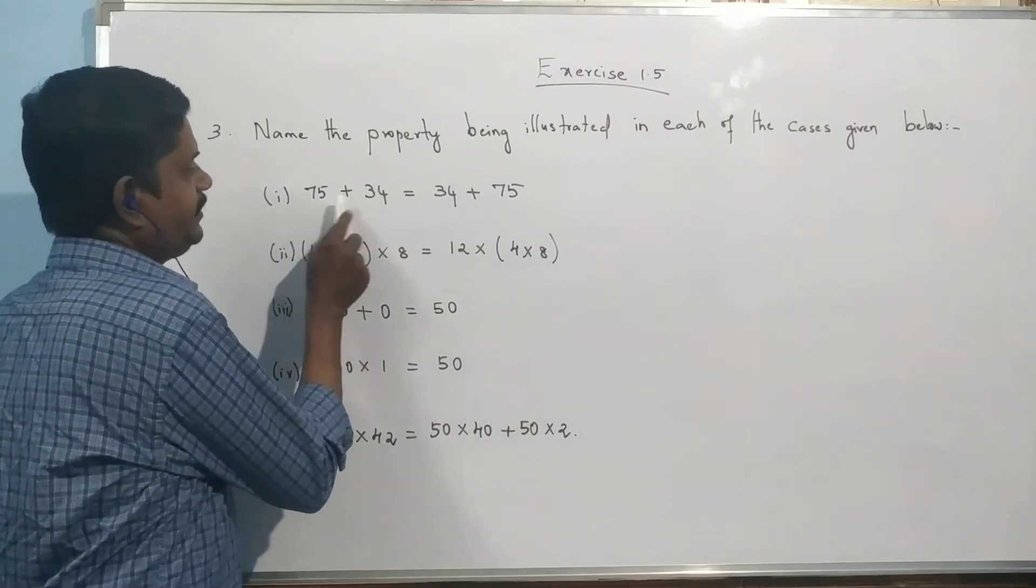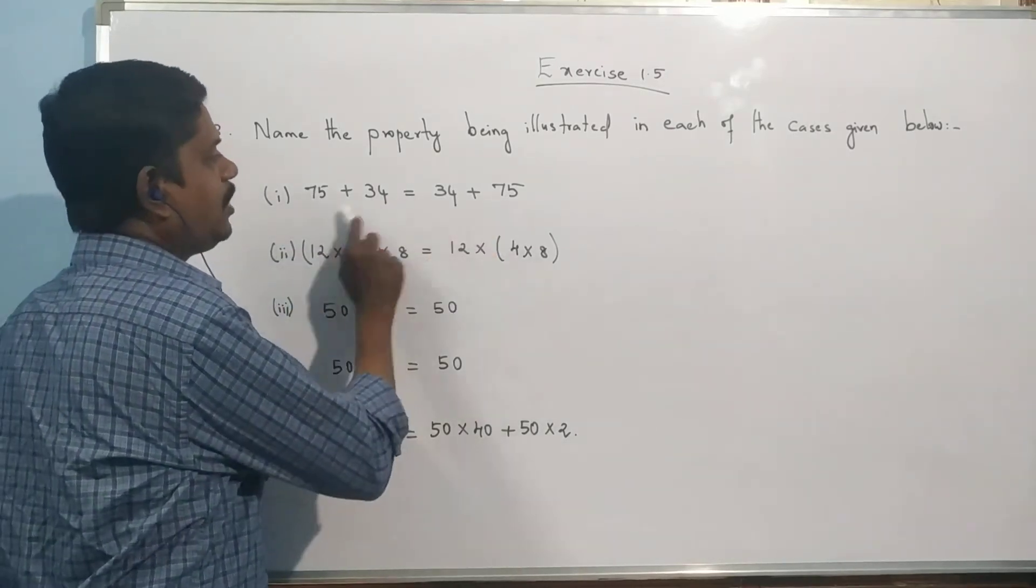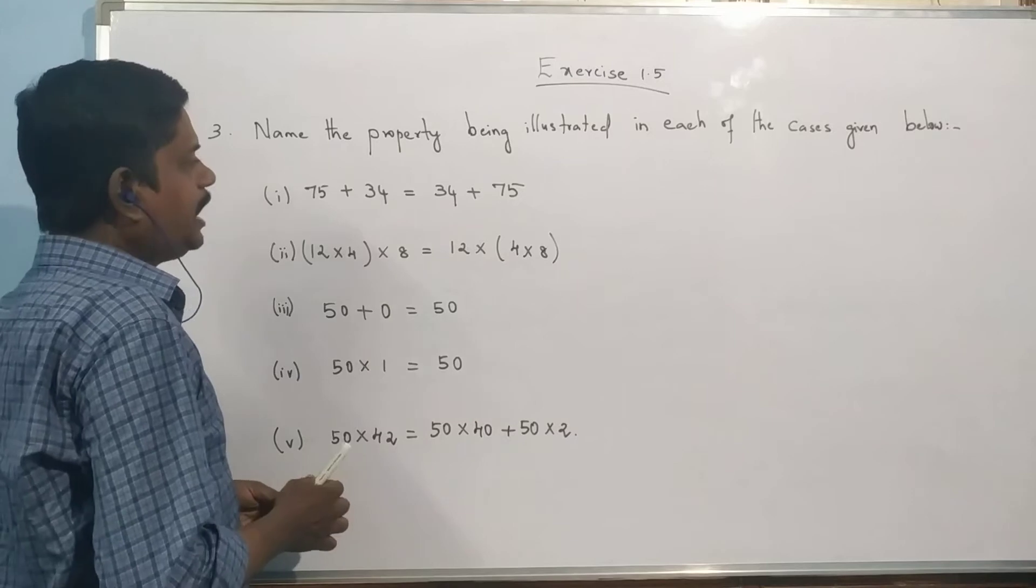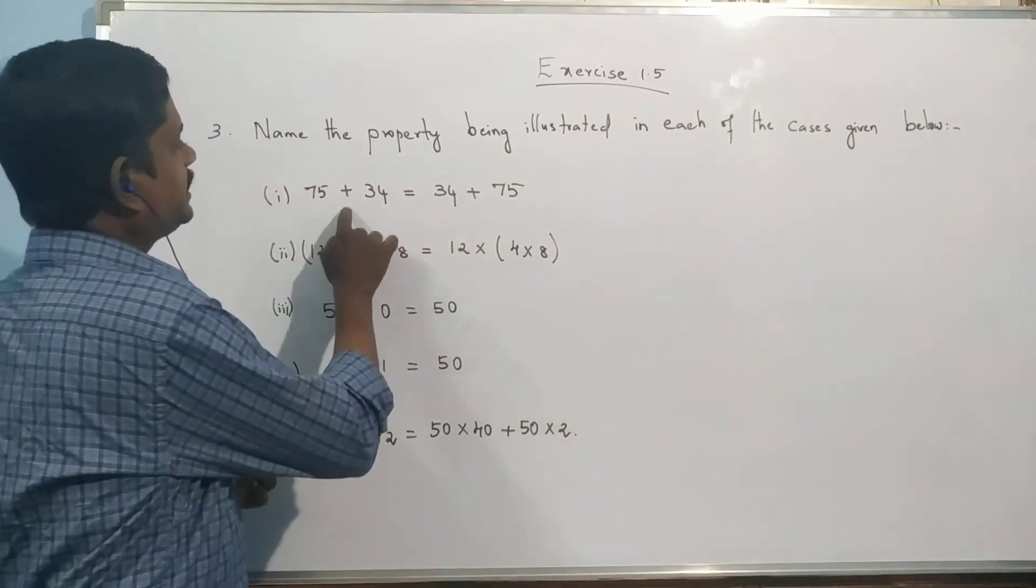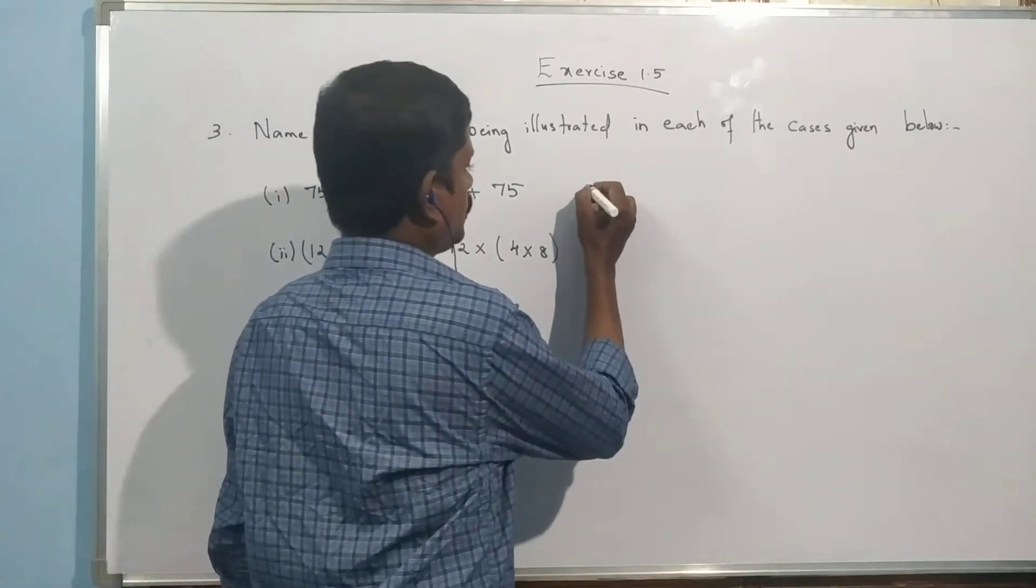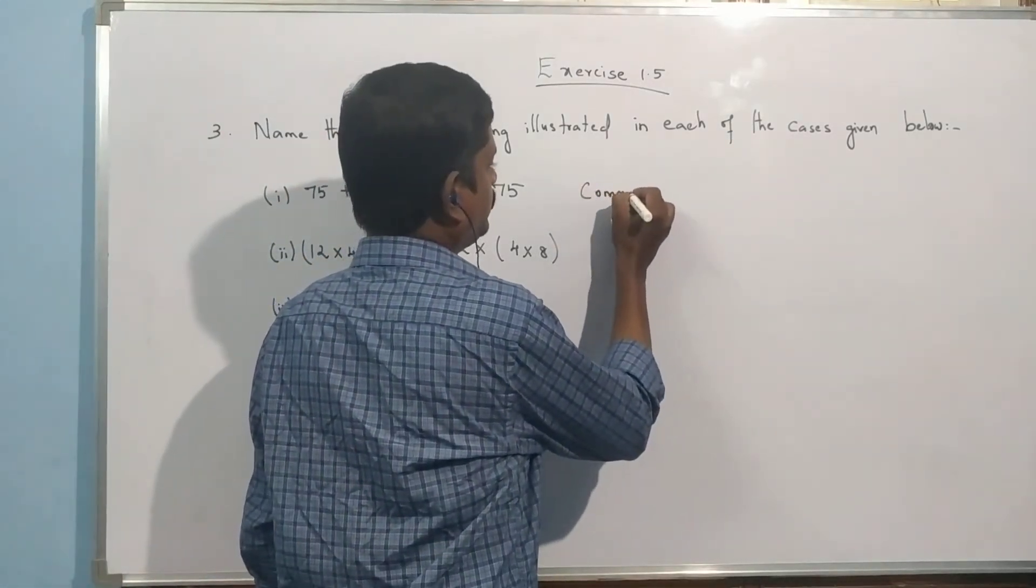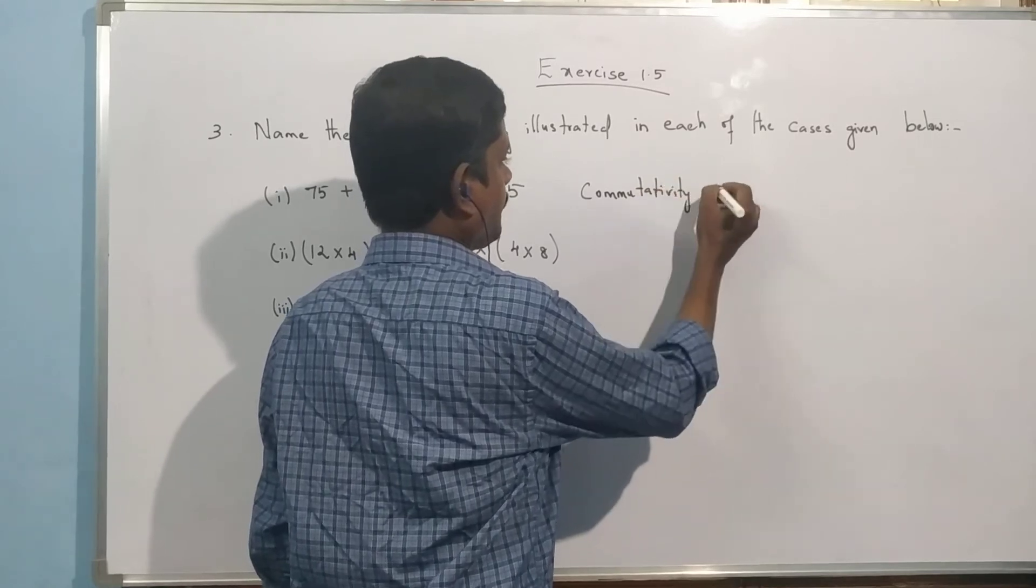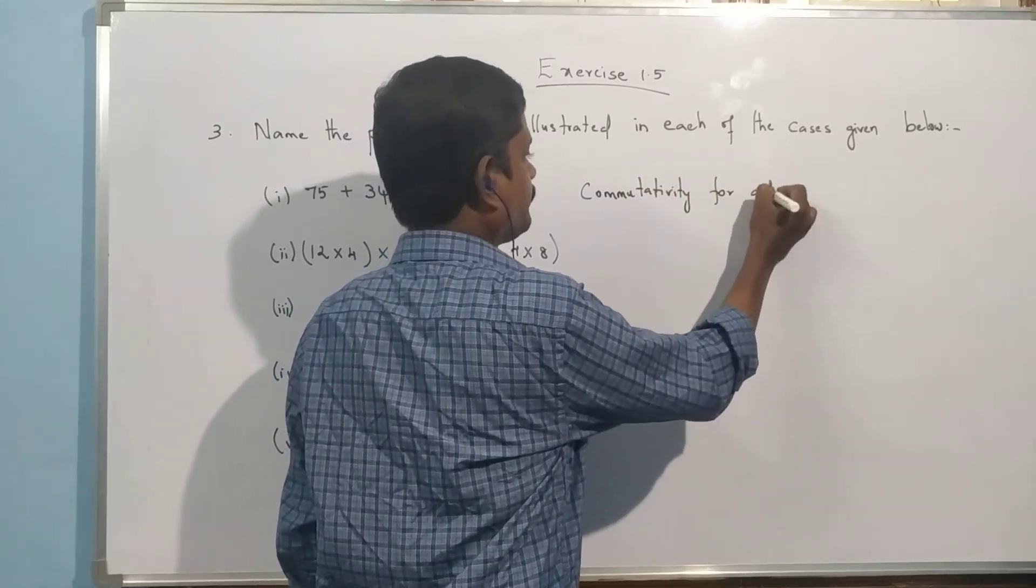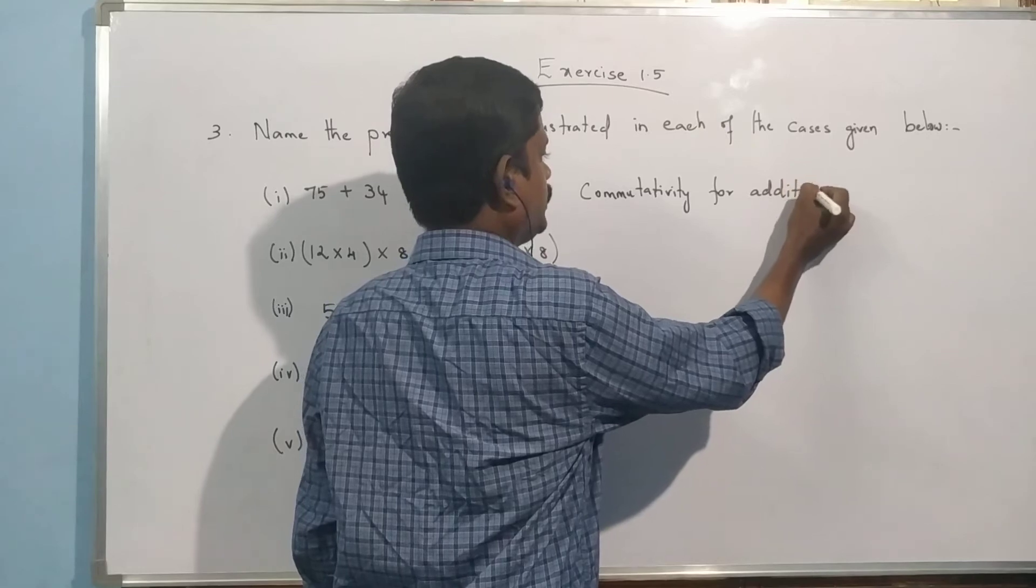So what do we have? 75 plus 34 equals 34 plus 75. The order changed. When order changes, that's commutativity. This is commutativity for addition. This is the property.